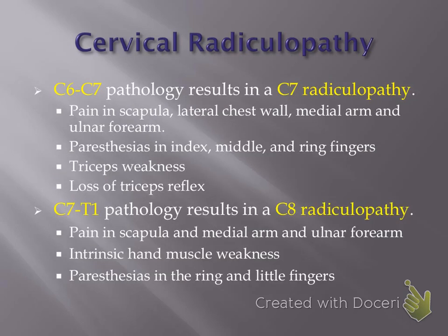With a C6-7 pathology, you'll get a C7 radiculopathy, which will result in pain in the scapula, possibly even into the lateral chest wall or axillary region, the medial arm, and ulnar forearm. You'll often get paresthesias in the index, middle, or ring finger — most commonly the middle finger. You can get tricep muscle weakness as well as a loss of the tricep reflex.